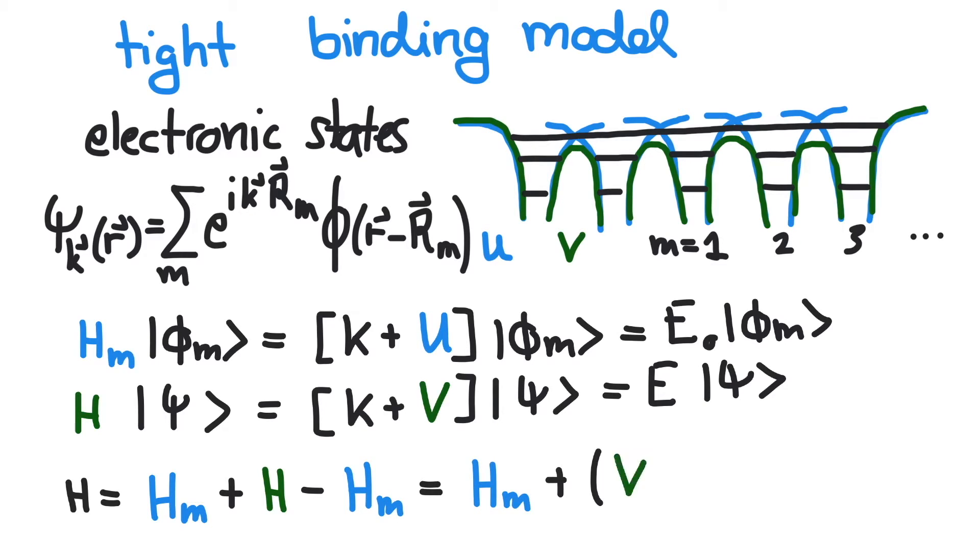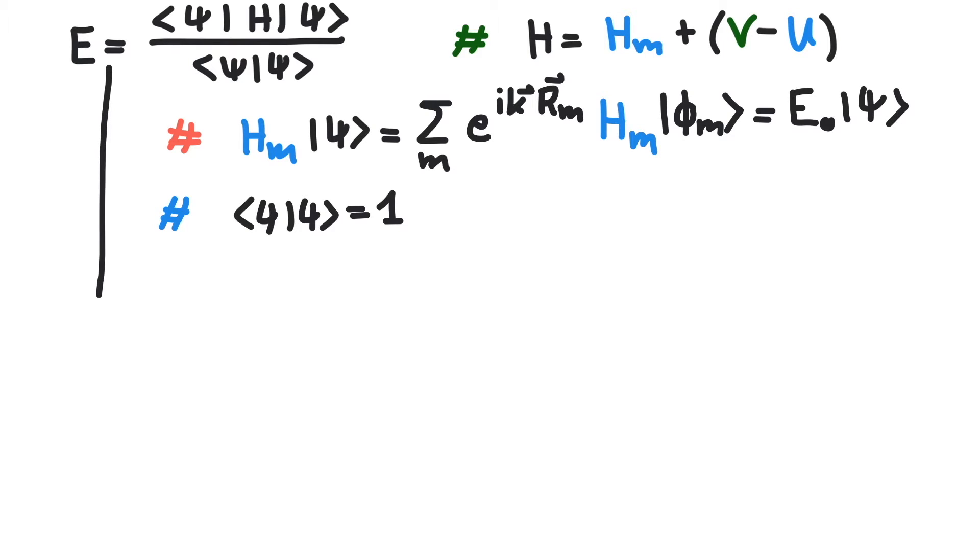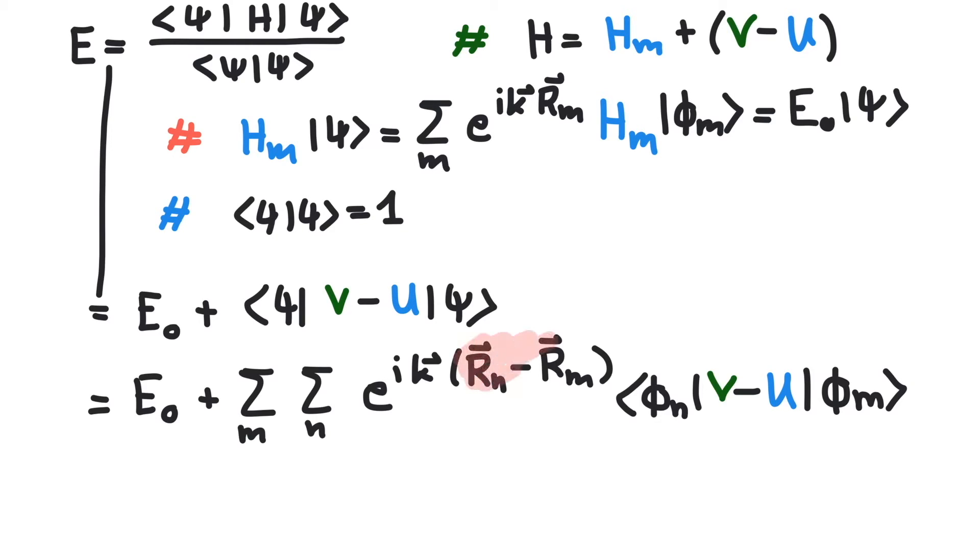In this way, we separate the crystal Hamiltonian into a part that is already solved and a part that is hopefully a small perturbation. The energy eigenvalue is computed as the expectation value of our new Hamiltonian. It easily falls apart into a major contribution and a minor correction. The sum in the correction can be rewritten by changing the basis slightly.